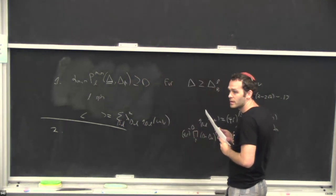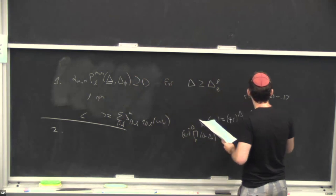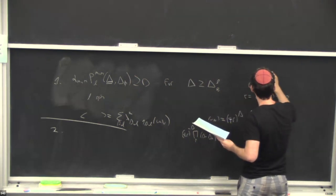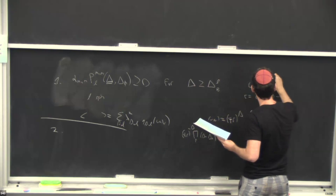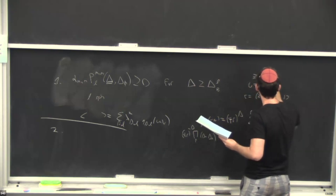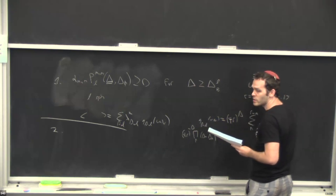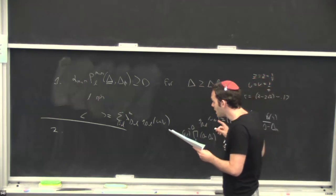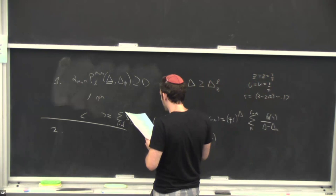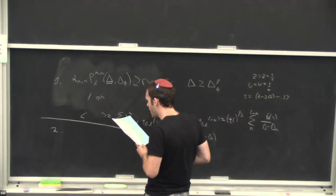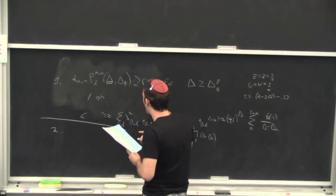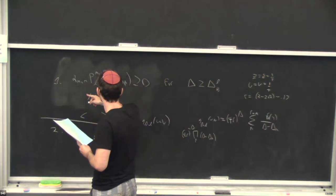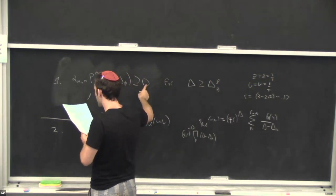The crossing symmetric point corresponds to Z = Z-bar = 1/2, which means U = V = 1/4. This is the second input to the algorithm: the functional is normalized in a certain way. The normalization involves alpha_{mn} acting on derivatives of the crossed block F(U,V) = G(U,V) − G(V,U), labeled by delta and L, evaluated at R equal to its special value with eta = 1. We call the specific operator being normalized delta_star, L_star.